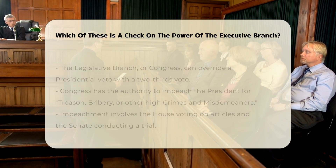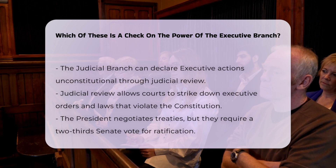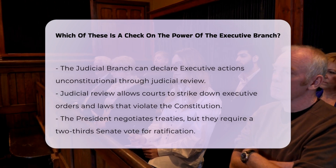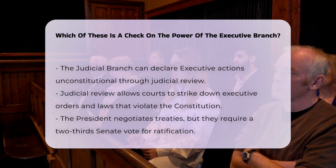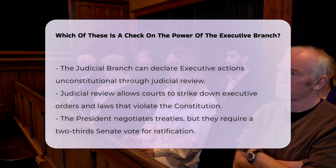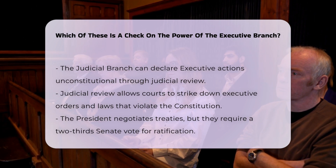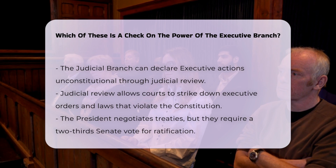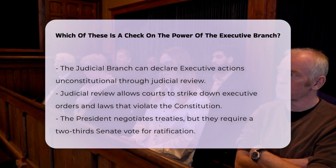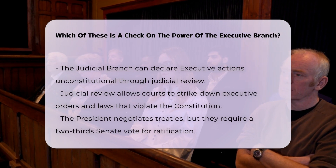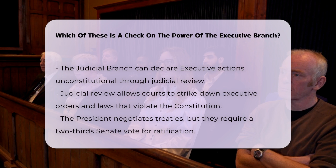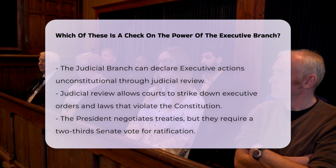Judicial checks. The judicial branch can declare actions of the executive branch unconstitutional. This includes the power to review and strike down executive orders, laws, or other actions that violate the Constitution. This judicial review ensures that the executive branch does not overstep its constitutional authority.